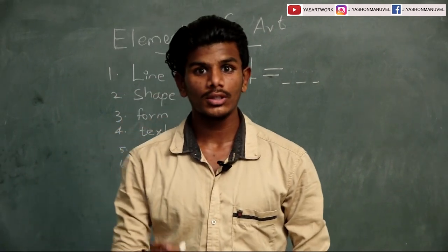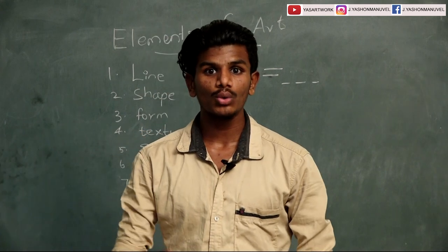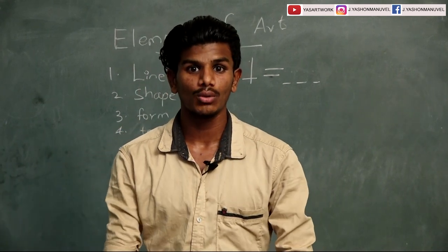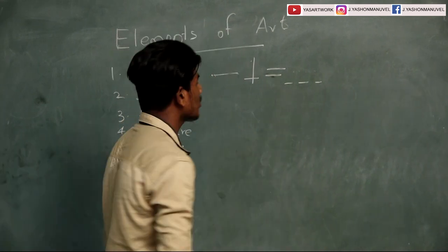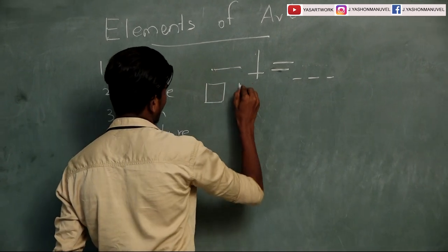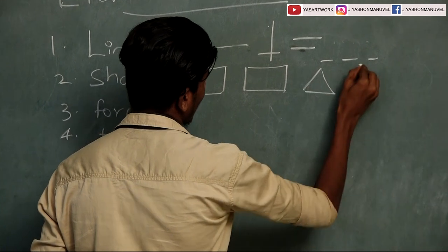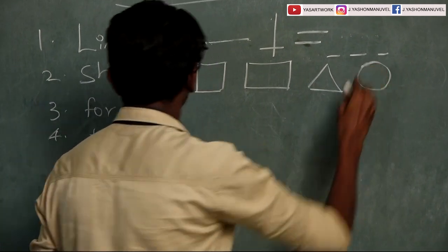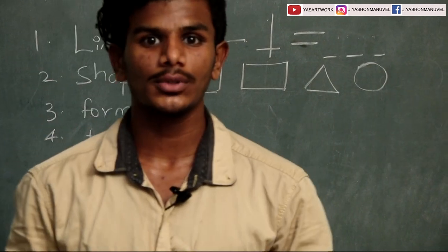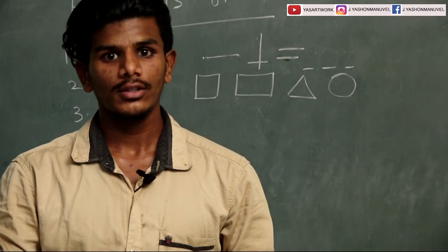The second element is Shape. Shape is arranged in two dimensions. Let's look at the examples: square, rectangle, triangle, and circle. These are all 2D shapes.